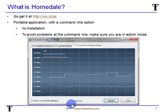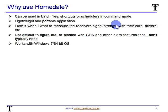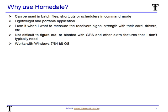That's the way Homedale looks when you've got it running. We can use it in batch files, shortcuts, or schedulers in command mode. It's lightweight and portable, nothing to install. I use it whenever I want to measure the receiver's signal strength with their card, their drivers, etc. Sometimes you go out with your wireless analyzer with its nice little card, great drivers, and external antenna, and everything looks great, but I want to see the signal strength on the laptop or desktop that I'm trying to troubleshoot at that time.